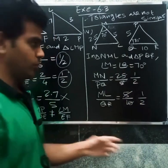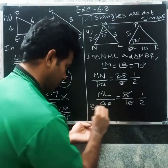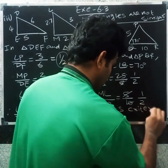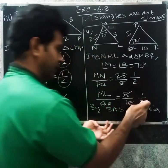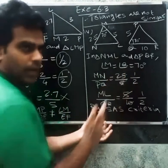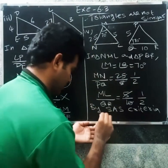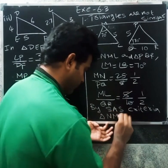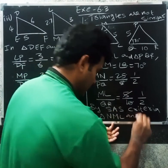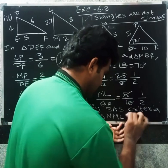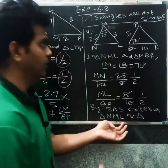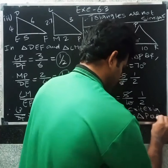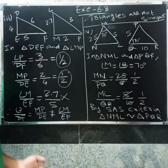By SAS similarity criterion — one angle equal and the included sides in the ratio 1 by 2 — triangle NML is similar to triangle PQR.